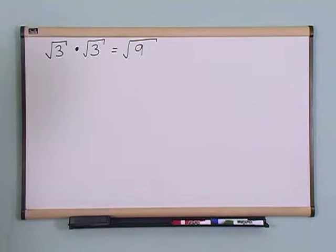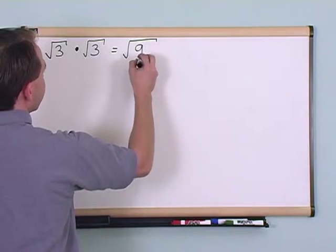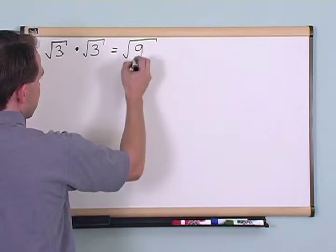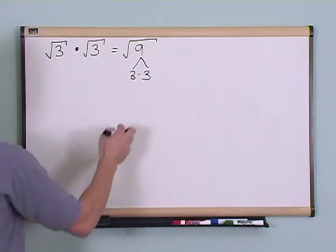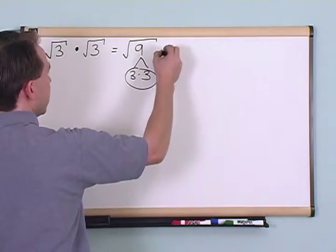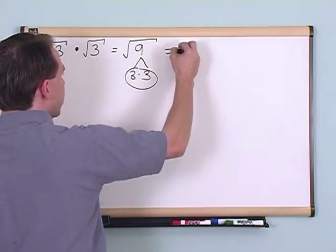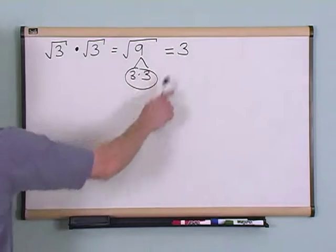So you could write that down as your answer, but we know that we should always check to see if the radical is fully simplified. In this case, if you haven't already memorized it, 9 is equal to 3 times 3. These are square roots, so I'm going to look for pairs of 2, which I've found. So I can pull this 3 out of the radical and write it down. So the answer to this is, in the end, 3.